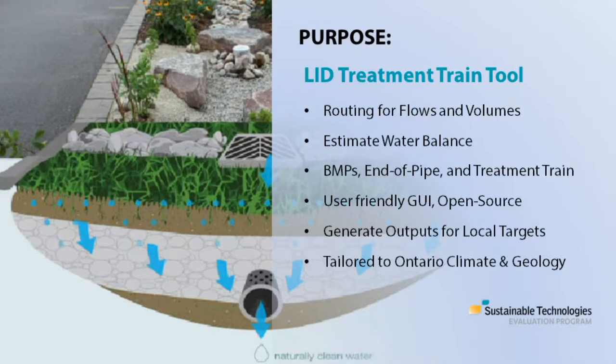The purpose of the LID treatment train tool is to analyze whether sustainable stormwater management goals can be achieved through the implementation of LIDs. The tool is used to compare hydrology and pollutant loadings for the pre- and post-development scenarios using annual and event-based simulations.